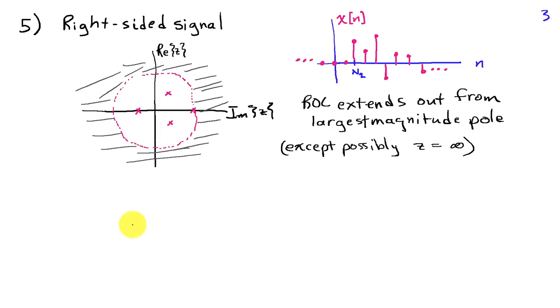If we have a right-sided signal, in other words, it's zero to the left of some point N2 and it exists to the right of some point N2, possibly going forever, then it turns out that the ROC extends out from the largest magnitude pole. So if we draw a circle of radius equal to the magnitude of that pole, the ROC is the region exterior to that. There's a possibility that Z equals infinity would have to be excluded as well.